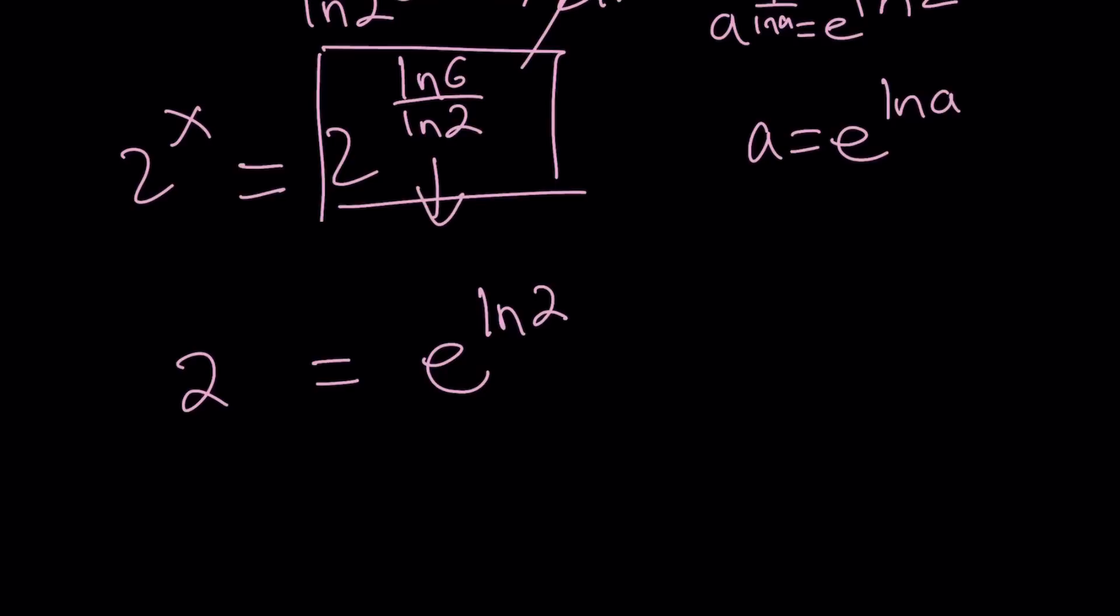I have 2 equals e to the power ln 2. But I do need this. So, let's raise both sides to the power ln 6 over ln 2. That's what I need, because this is 2 to the power x, remember? That's what I'm trying to find. Raise this to the power ln 6 over ln 2. And kaboom! You're going to see that ln 2 cancels out. You end up with e to the power ln 6.